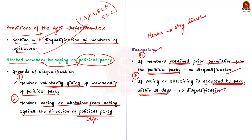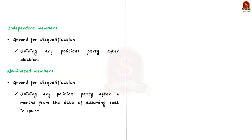A member elected on a party ticket should continue in the party by obeying party decisions; if they do not obey, they may face disqualification, subject to those exceptions. Now, regarding independent members: independent members shall be disqualified if they join another political party after the election. Independent members are elected without being set up as a candidate by any political party.